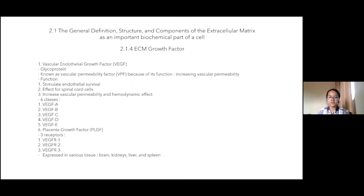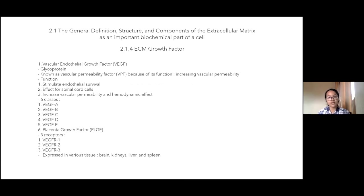The extracellular matrix plays important roles in many normal and pathological processes, including development, inflammatory states, and the spread of cancer cells. There are three kinds of growth factors of the extracellular matrix that are involved in these processes: vascular endothelial growth factor, fibroblast growth factor, and transforming growth factor beta. The first is vascular endothelial growth factor.